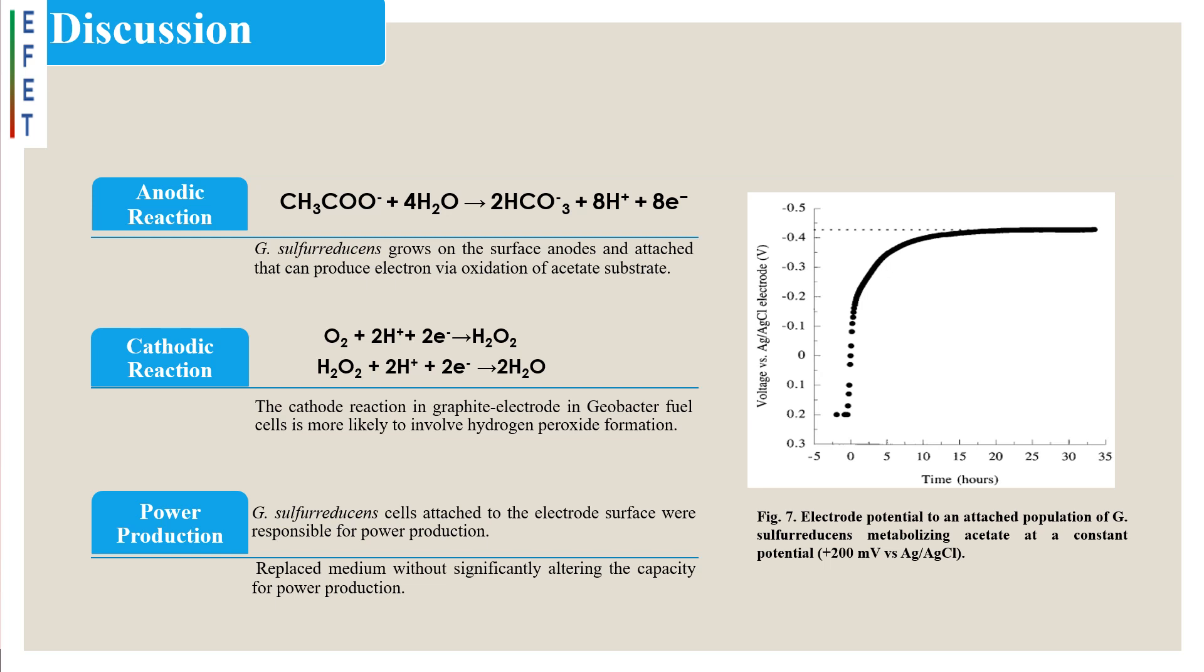Cathodic reaction observation: Based on the open-circuit potentials obtained from fuel cells, these calculations suggest that the cathode reaction in graphite electrode Geobacter fuel cells is more likely to involve hydrogen peroxide formation.